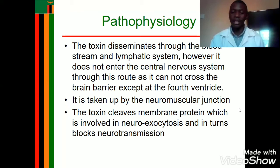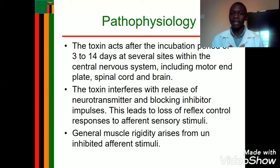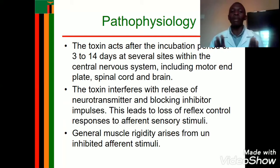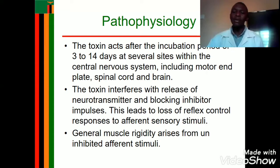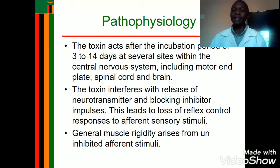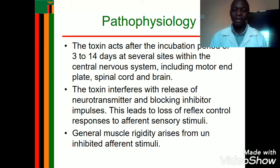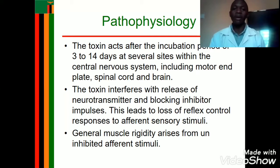The toxin acts after an incubation period of about 3 to 14 days — on average eight days — at several sites within the central nervous system, including the motor end plate, spinal cord, and brain. The toxins interfere with the release of neurotransmitters, blocking inhibitory impulses, which leads to loss of reflex control and response to afferent sensory stimuli. This results in generalized muscle rigidity, as the muscles cannot receive impulses and become unable to respond to stimuli.